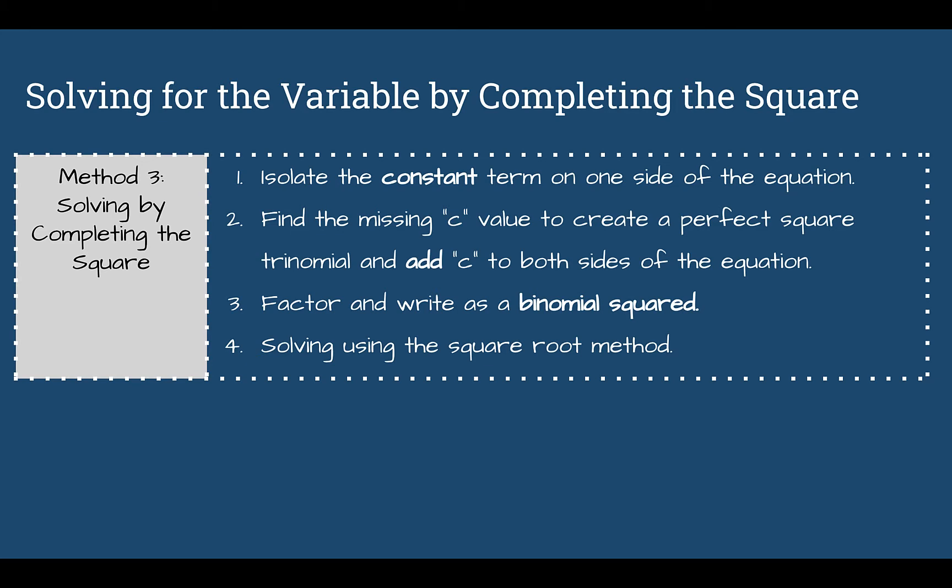Completing the square is our third method for solving for a variable when we have an x to the second power. We saw square roots as our first method, and you're actually going to need that method as part of this one. We also saw solving by factoring. First, you're going to isolate the constant on one side of the equation — move your constant to the right side, away from your variables. Then find the missing c value that would create a perfect square trinomial on the left, and add that same c value to both sides. Third, factor and write the left side as a binomial squared. Last, solve using the square root method from lesson one.